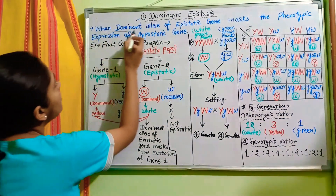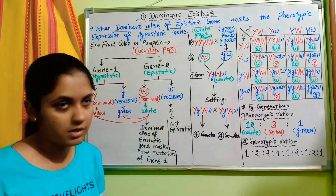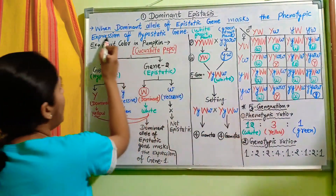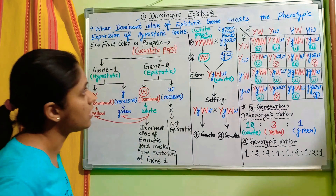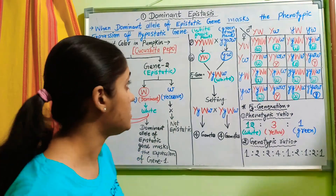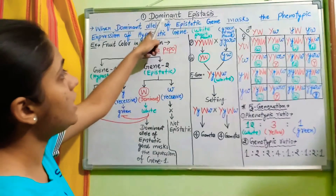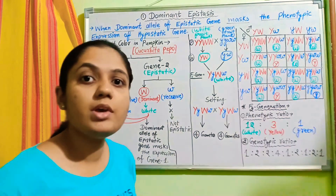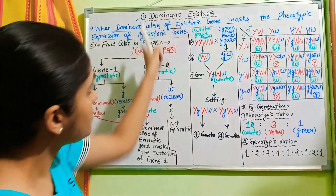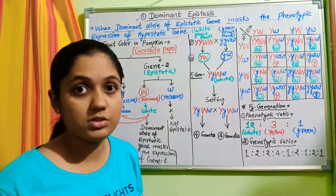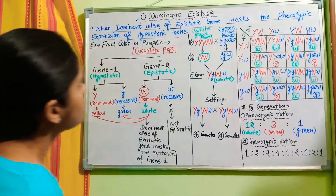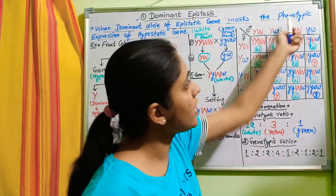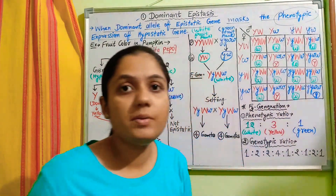When the dominant allele of the epistatic gene masks or suppresses the phenotypic expression of the hypostatic gene, this process is known as dominant epistasis. The dominant allele is involved in the epistasis process, not the recessive allele. Only the phenotype is affected, not the genotype — genotype remains independent.